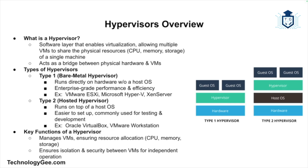Hypervisors come in two main types. The first is called a type one or bare metal hypervisor, which runs directly on the hardware without a host operating system. Examples include VMware ESXi, Microsoft Hyper-V, and Xen Server. Because they run directly on hardware, type one hypervisors are typically used in enterprise environments where performance and efficiency are critical.